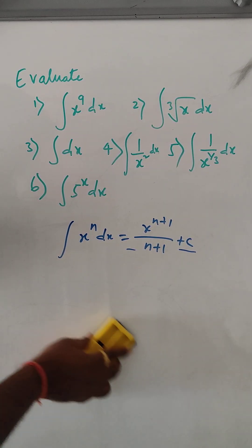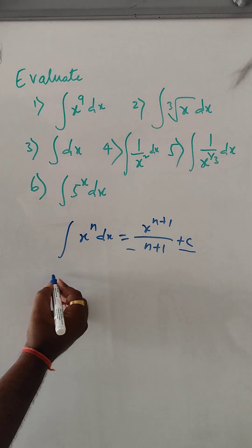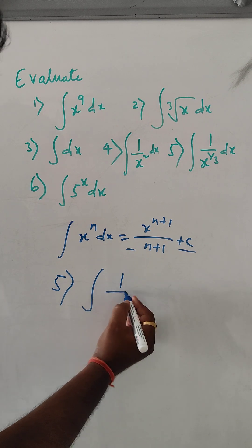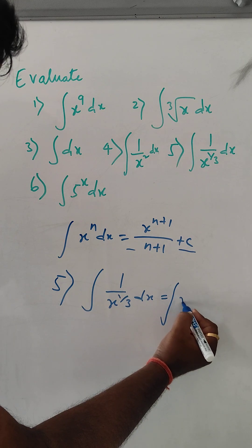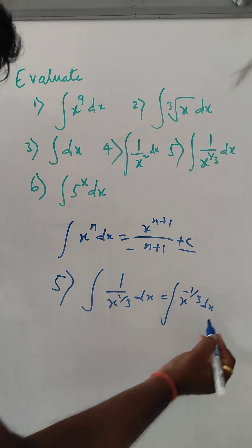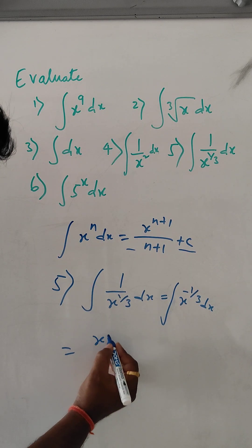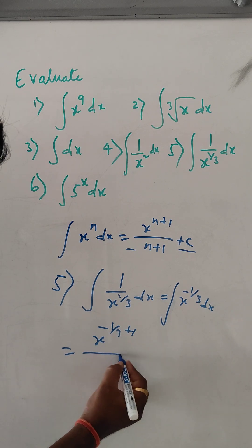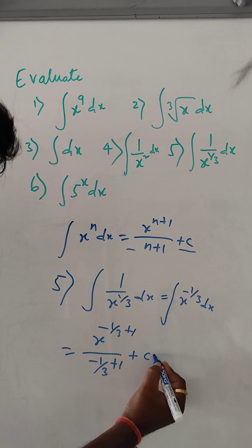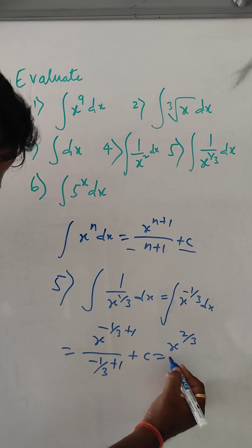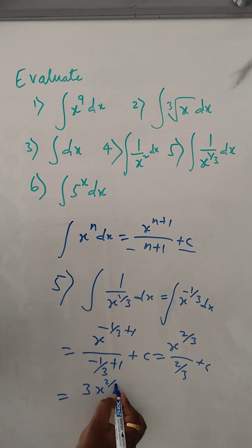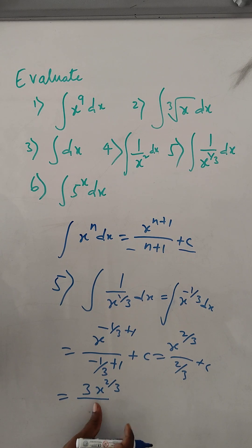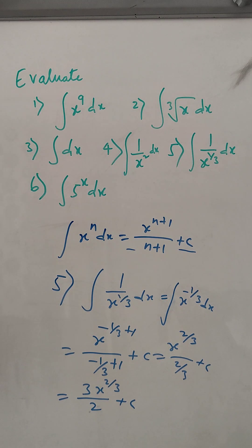Problem number 5. Integral of 1 by x to the power 1 by 3 dx, which can be written as integral of x to the power minus 1 by 3 dx. This gives x to the power minus 1 by 3 plus 1, divided by minus 1 by 3 plus 1, plus c — that is x to the power 2 by 3 divided by 2 by 3, which is 3x to the power 2 by 3 by 2 plus c. This is the solution of problem number 5.